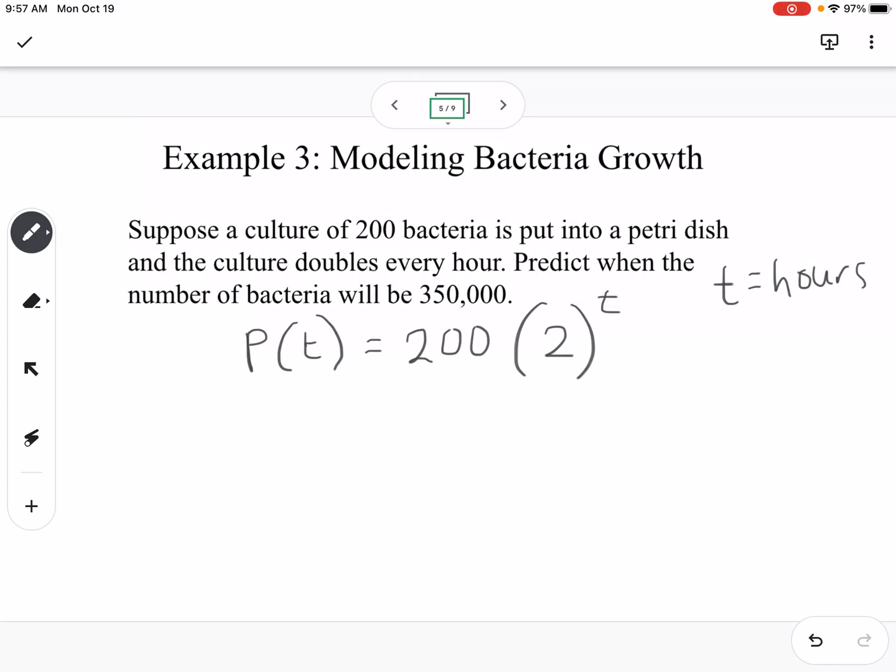What we want to know is we're looking for when does 350,000 equal 200 times 2 to the T. This is always interesting to me because you've already learned about exponential and logarithmic functions in Algebra 2. However, we haven't learned about logs in this class yet. So the recommendation for solving this right now, until we get into those log problems, is to use a graph.